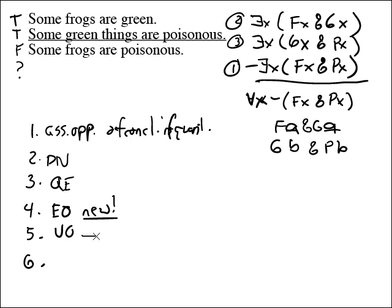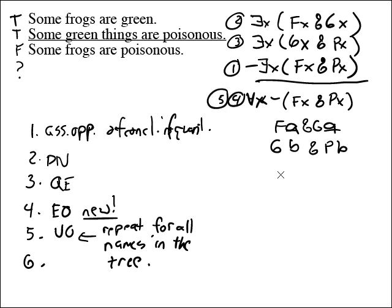No more existentials to work on. We have to do universal out. This is the place where the tree method varies a little bit from the proof method because for universal out on the tree method, we explicitly state that you have to repeat universal out, repeat for all names in the tree. How many names are in our tree at the moment? Two. A and b. Therefore, we have to do this step two times. So I'm going to call this step four and step five. And when I work on it, I'm going to first get dash fa ampersand pa, and then I'm going to do it again and get dash fb ampersand pb. Okay.